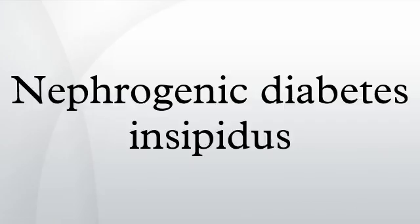Nephrogenic diabetes insipidus is a form of diabetes insipidus primarily due to pathology of the kidney. This is in contrast to central neurogenic diabetes insipidus, which is caused by insufficient levels of antidiuretic hormone arginine vasopressin. Nephrogenic diabetes insipidus is caused by an improper response of the kidney to ADH, leading to a decrease in the ability of the kidney to concentrate the urine by removing free water.